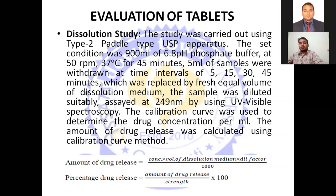Five ml of sample is withdrawn at time intervals of 5, 15, 30, and 45 minutes. After each withdrawal, the volume in the chamber is maintained at 900 ml by adding fresh pH 6.8 phosphate buffer. So every time we take a 5 ml sample, we replace it with 5 ml of phosphate buffer to maintain the total volume at 900 ml.